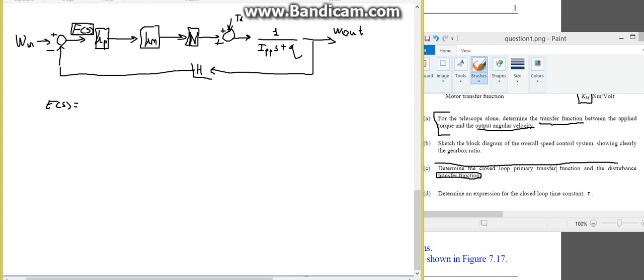We have a measurement transducer being summed, and an output being summed. So, therefore, you'll have minus h multiplied by w out.